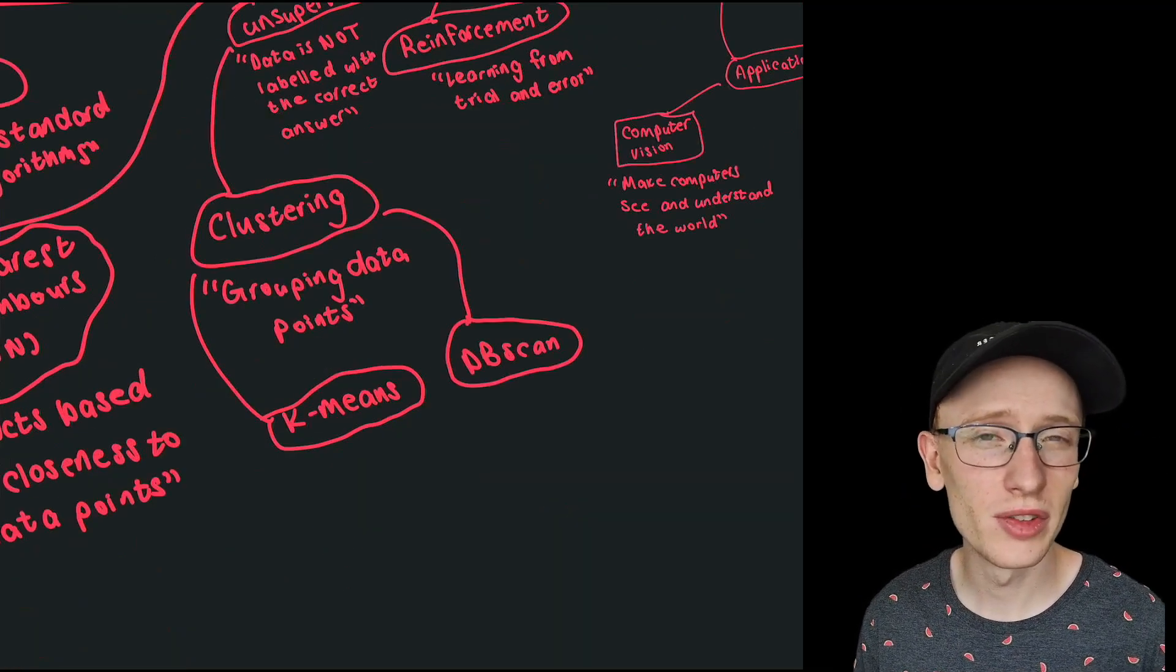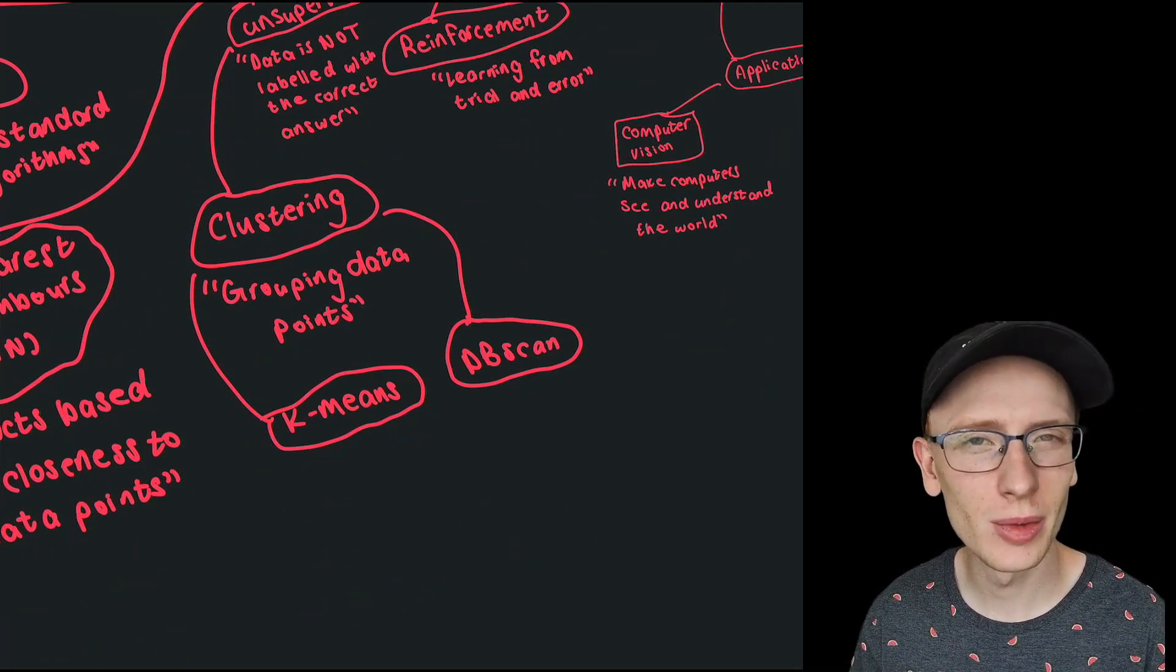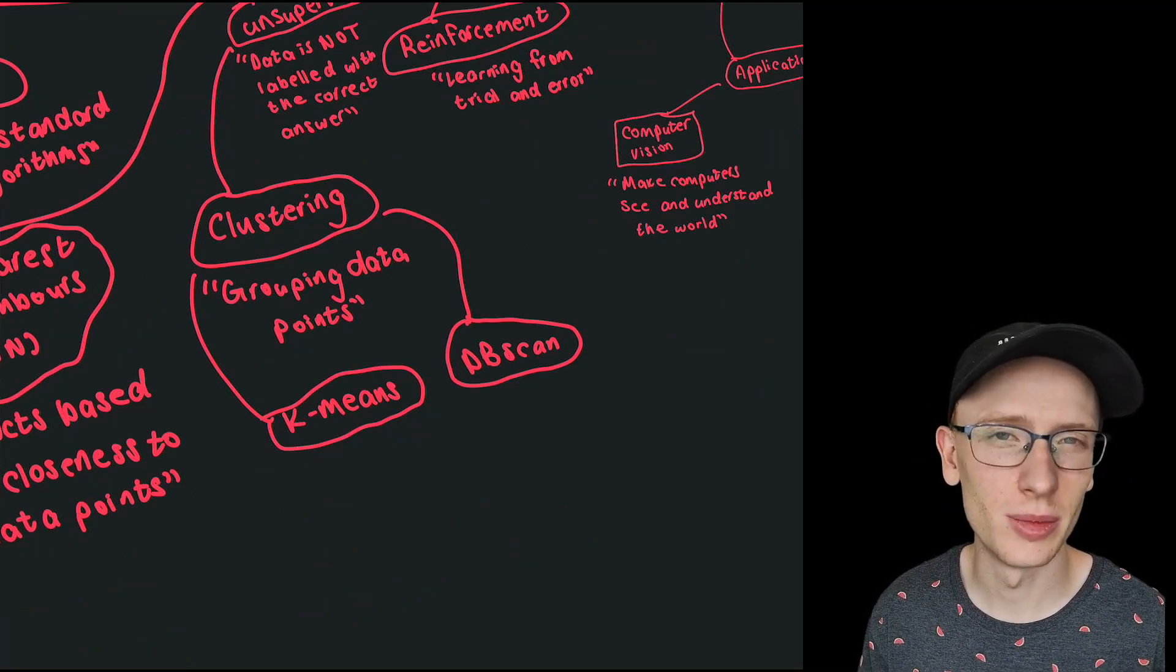And this is going to be a little bit confusing without really going into it, but I'm just going to say that k-means is centroid based, and DBSCAN is density based.